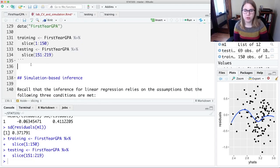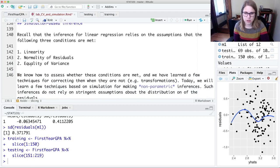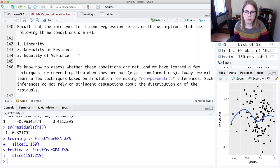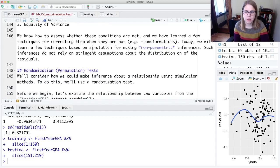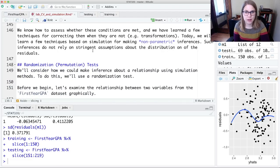All right. So that was about testing and training data sets, which the book calls cross-validation. The other thing that I put in this lab document is simulation-based inference, where we're going to be able to do inference without having our conditions necessarily met, and we're going to use randomization and the bootstrap.